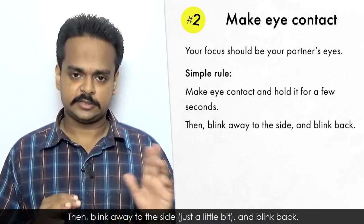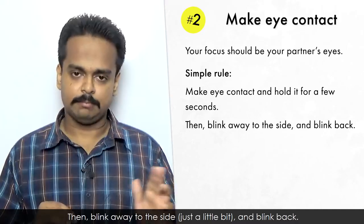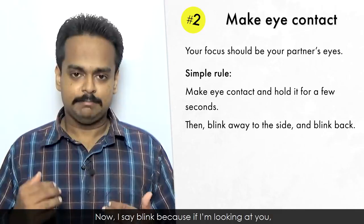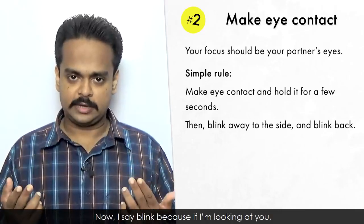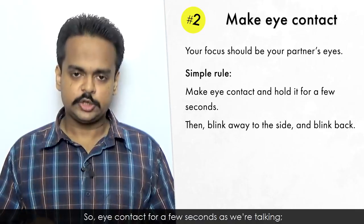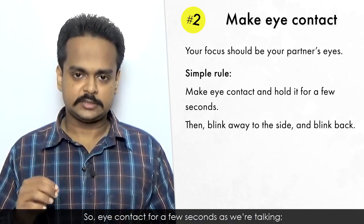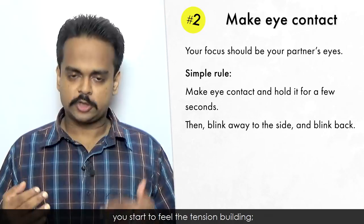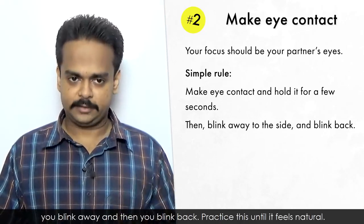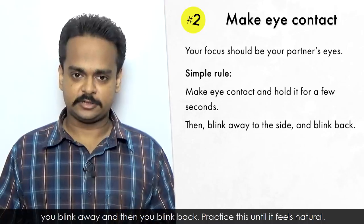Just hold eye contact until you start to feel that tension. Then blink away to the side just a little bit and blink back. This will release that tension. Now I say blink because if I'm looking at you and I suddenly look away, it's too distracting. So, eye contact for a few seconds as we're talking, you start to feel the tension building, you blink away, and then you blink back. Practice this until it feels natural.